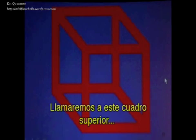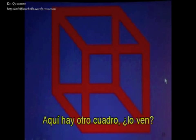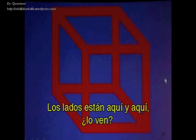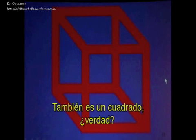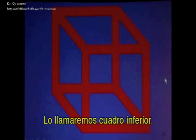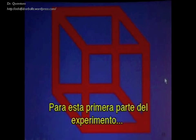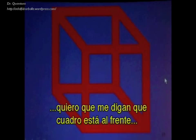Call that the upper square. Now here's another square — you see this one here? Goes down like this, and down, and up around this, and up. That's also a square, isn't it? Call that the lower square. Now the first part of this experiment is: I want you to tell me which square is in front, the upper or the lower.